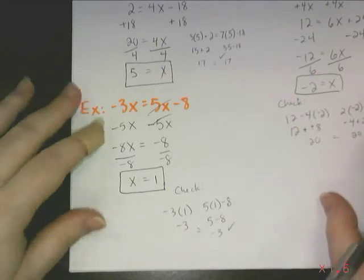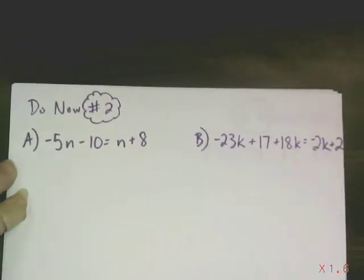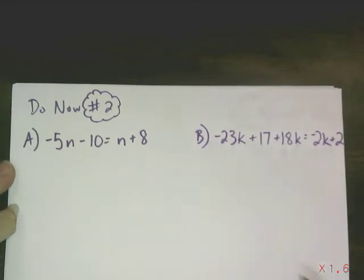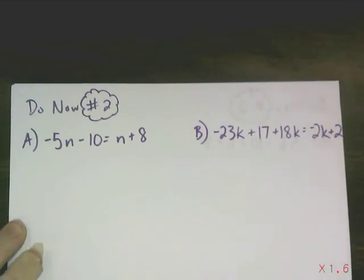Now, it's your turn to try. Do now number 2. Hey, look, it's another little happy cloud. You should be used to that by now. Two parts, A and B. Pause it and work them out.